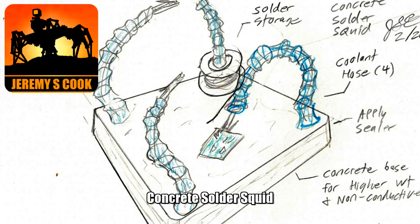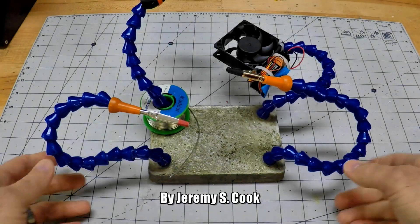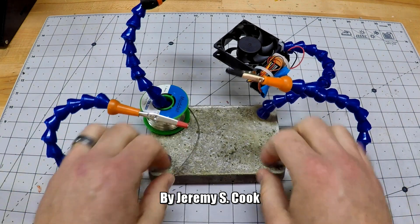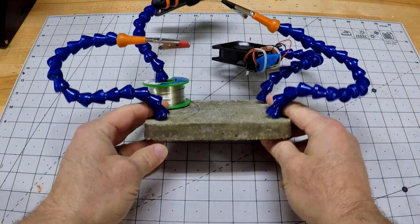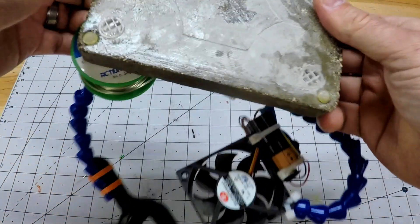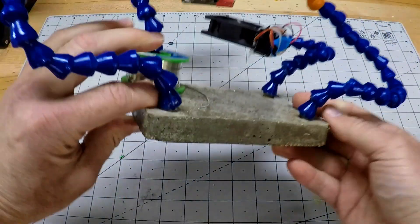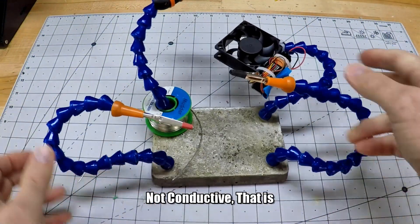Jeremy S. Cook here, and today I'll be making a solder squid, but not just any solder squid. This solder squid is made from concrete, made in a 3D printed mold. This side of this concrete makes it heavier than say wood or plastic, but non-conductive like you might see in metal or something like that.